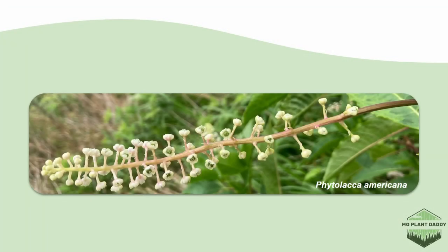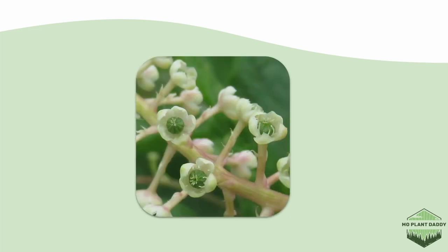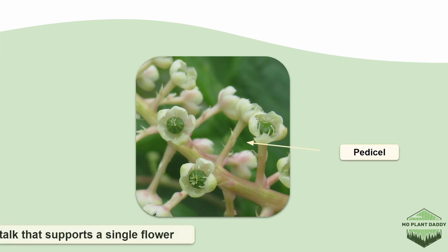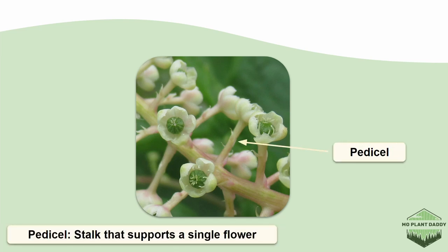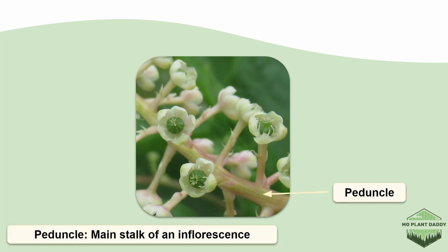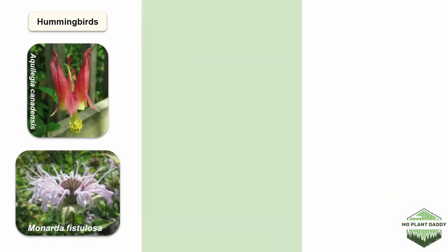If we take a look at another type of inflorescence belonging to a pokeberry, we'll notice it looks quite different than that of our sunflower. Zooming in, this inflorescence has small yet noticeable flowers held up by a pedicel, which is a stalk that supports an individual flower. Those pedicels are attached to the peduncle, otherwise known as the main stalk of the inflorescence.